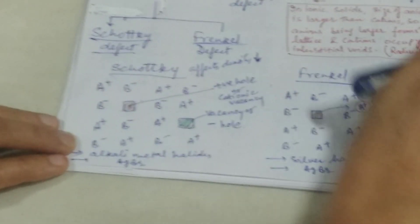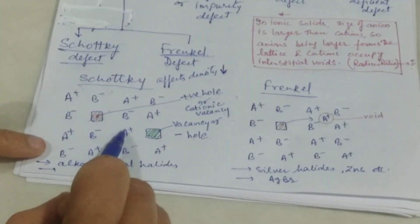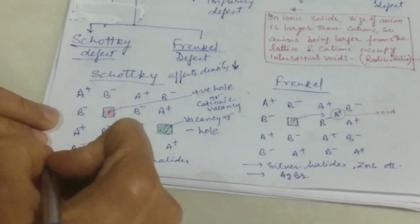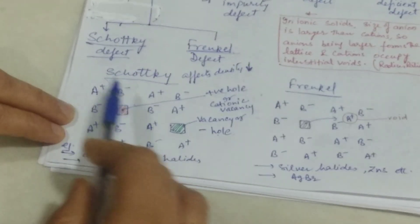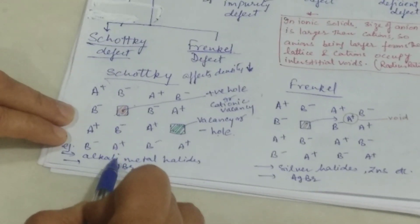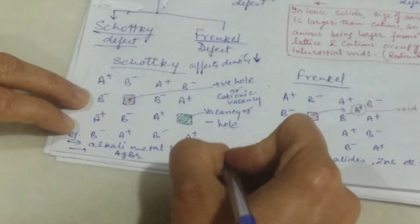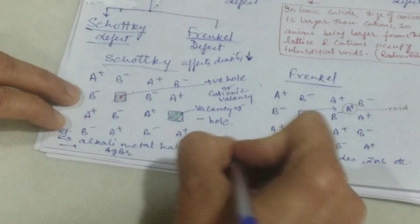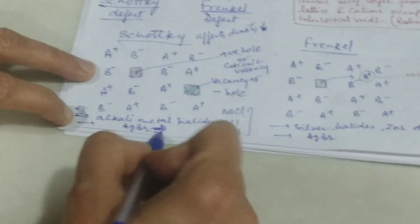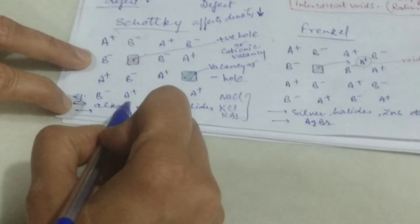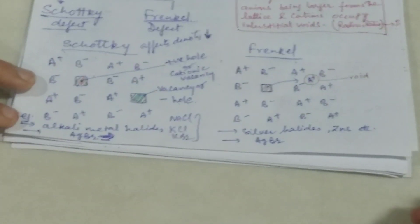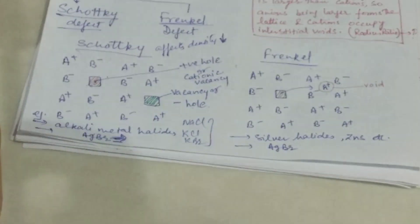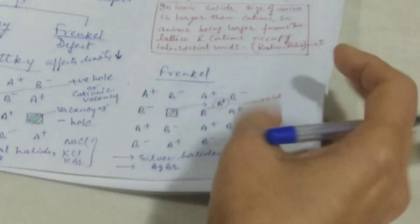The main consequence of the Schottky defect is that it decreases the density of the crystal. For the exam, remember: definition, condition, consequences, and examples. The examples of Schottky defect are alkali metal halides — KCl, KBr, NaCl. AgBr is an exception — it is the only compound which gives both Schottky defect and Frenkel defect. Next is the Frenkel defect.